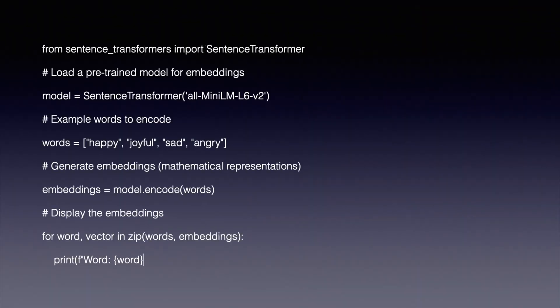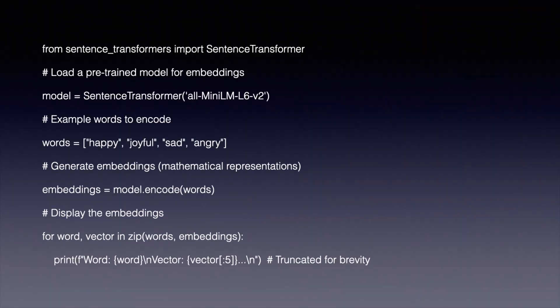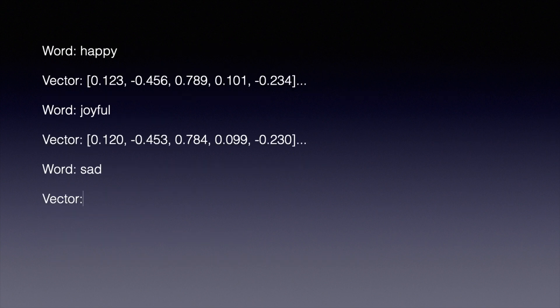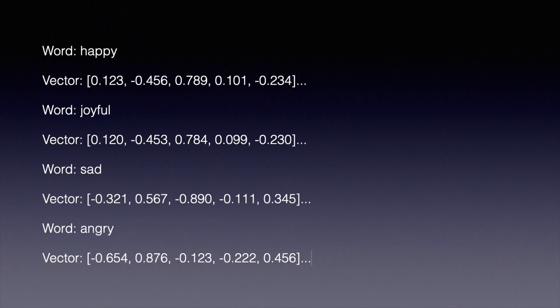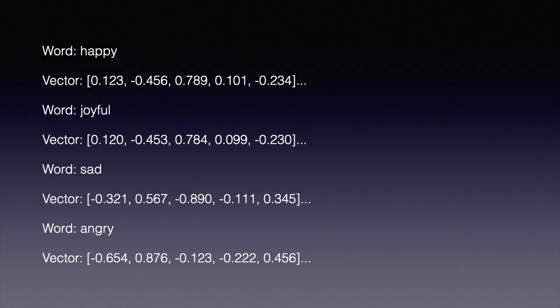Here's how embeddings work in Python using the sentence transformers library, which basically results in this: each word gets transformed into a high-dimensional vector, essentially a list of numbers. Notice how 'happy' and 'joyful' have similar vectors? They're close in this multidimensional space. Meanwhile, 'sad' and 'angry' are further away because their meanings are different.